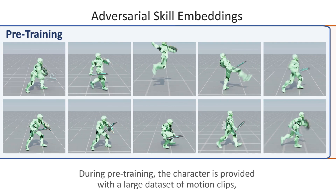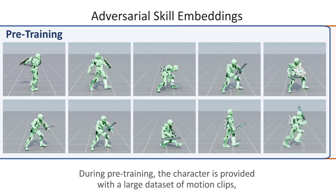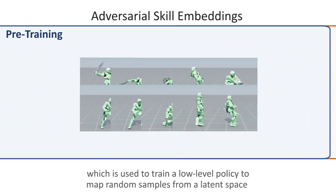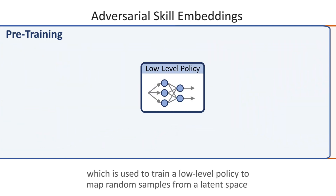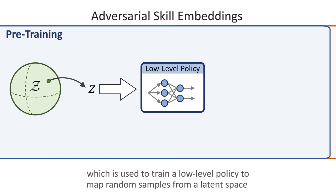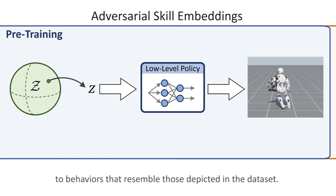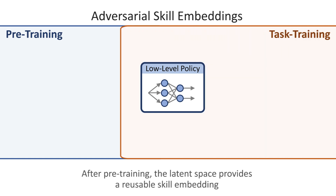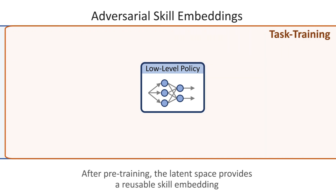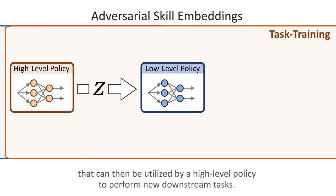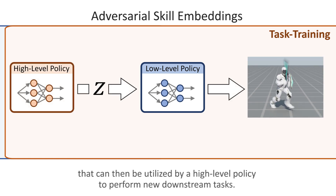During pre-training, the character is provided with a large dataset of motion clips, which is used to train a low-level policy to map random samples from a latent space to behaviors that resemble those depicted in the dataset. After pre-training, the latent space provides a reusable skill embedding that can then be utilized by a high-level policy to perform new downstream tasks.